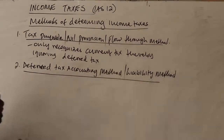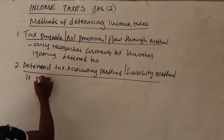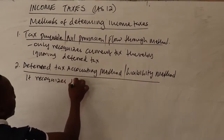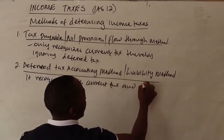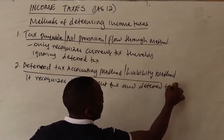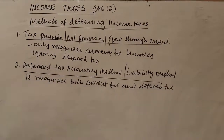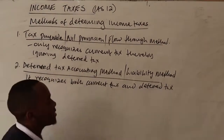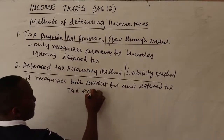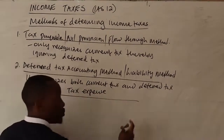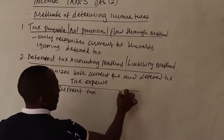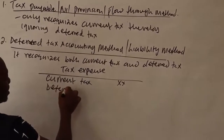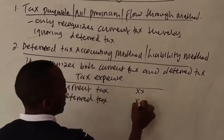Method two is the deferred tax accounting method, also called the liability method. This method recognizes both current tax and deferred tax, and this is the recommended method under IAS 12. Under this approach, tax expense will comprise both elements: current tax and changes in deferred tax.